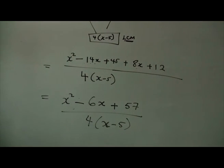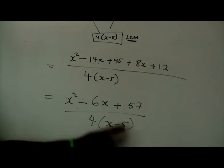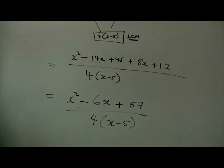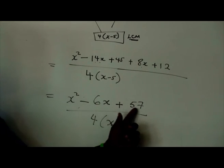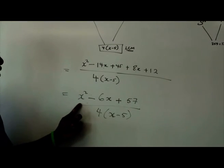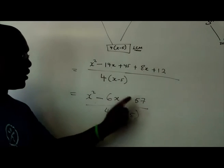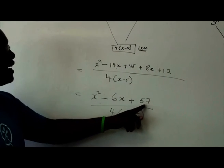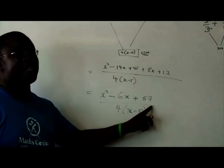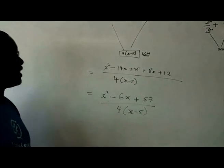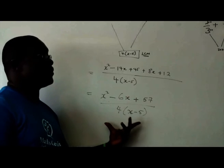The question is, can we simplify this any further? If you look at x squared minus 6x plus 57, can we simplify it? I don't think so, because there are no factors of 57 if added will give you 6, because 57 is a prime number. It means that we have actually simplified it to its lowest terms.